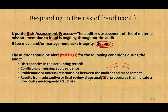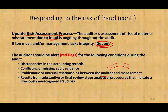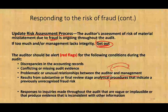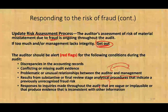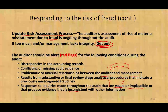Results from substantive or final review analytical procedures that indicate previously unrecognized fraud risk. After you are done with the audit, during the final review, you notice that certain numbers don't make sense — that's a red flag. That's why we do analytical procedures at the end of the audit, to look at the overall picture after adjustments. Also, if responses to inquiries made throughout the audit are vague or implausible, or produce evidence inconsistent with other information — when you ask management about something and they're being vague or the information conflicts with other evidence — that's a red flag.